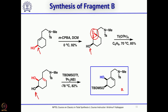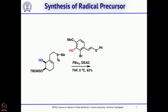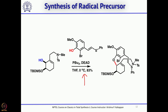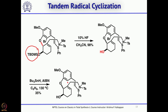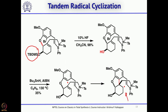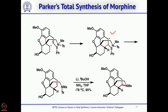Once Fragment A and Fragment B are in hand, the Mitsunobu reaction is carried out to combine them to get this bicyclic compound. This sets the stage for the key 5-exo radical cyclization followed by 6-endo and elimination of the phenylthio radical. When treated with AIBN and tributyltin hydride, and before that the bulky TBDMS group is cleaved using a fluoride source to give the corresponding alcohol, the key reaction takes place: first it forms the radical, that radical undergoes 5-exo to give the intermediate, and then the radical further undergoes 6-endo.